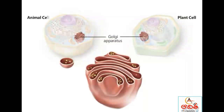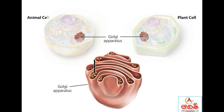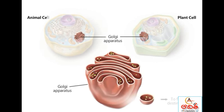The Golgi apparatus is a series of flattened membrane compartments whose purpose is to process and package proteins produced in the rough endoplasmic reticulum. Transport vesicles deliver proteins from the rough endoplasmic reticulum to the Golgi apparatus. As the proteins make their way through the Golgi apparatus, they are processed, then packaged into transport vesicles, which deliver the proteins to their final destination.